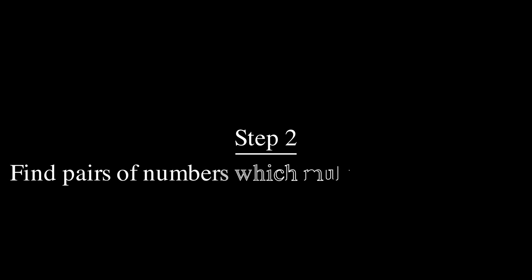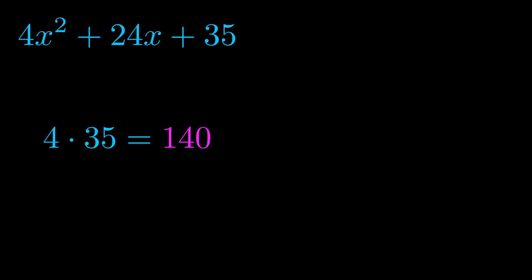Step two is to try to find all of the pairs which multiply to this number. Now it turns out you don't really need to find all of them, but go ahead and write down as many numbers as you can that multiply to the magenta value for now. Pause the video and resume when you're ready to continue.